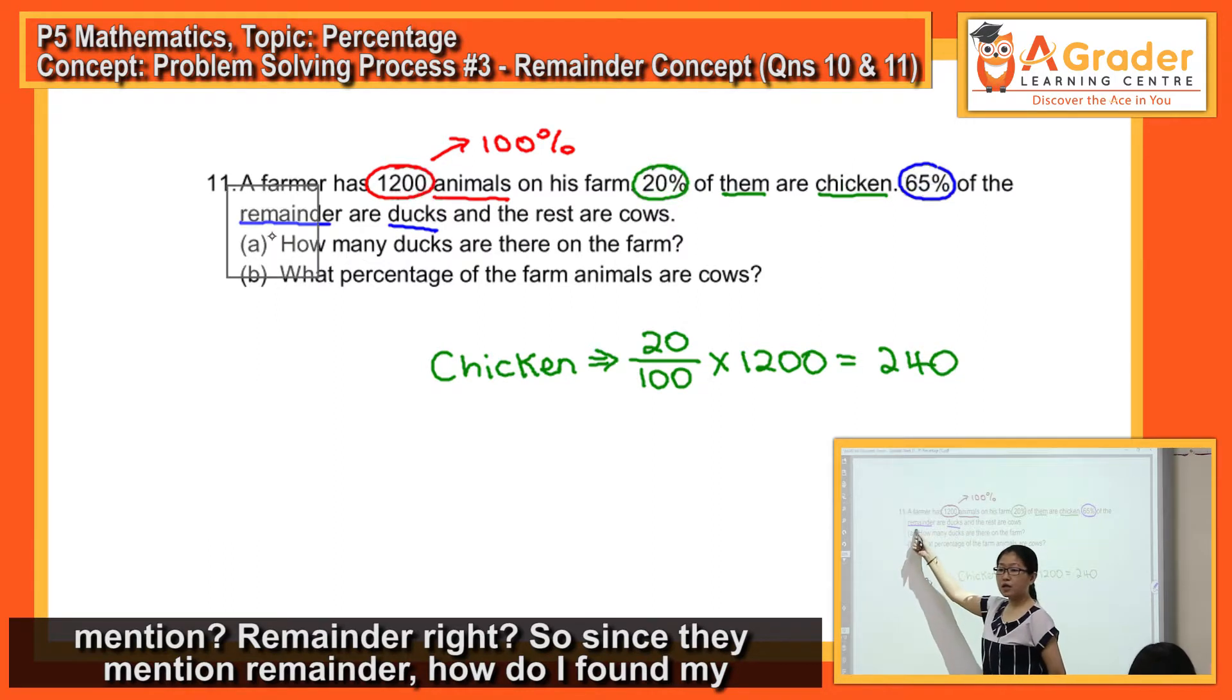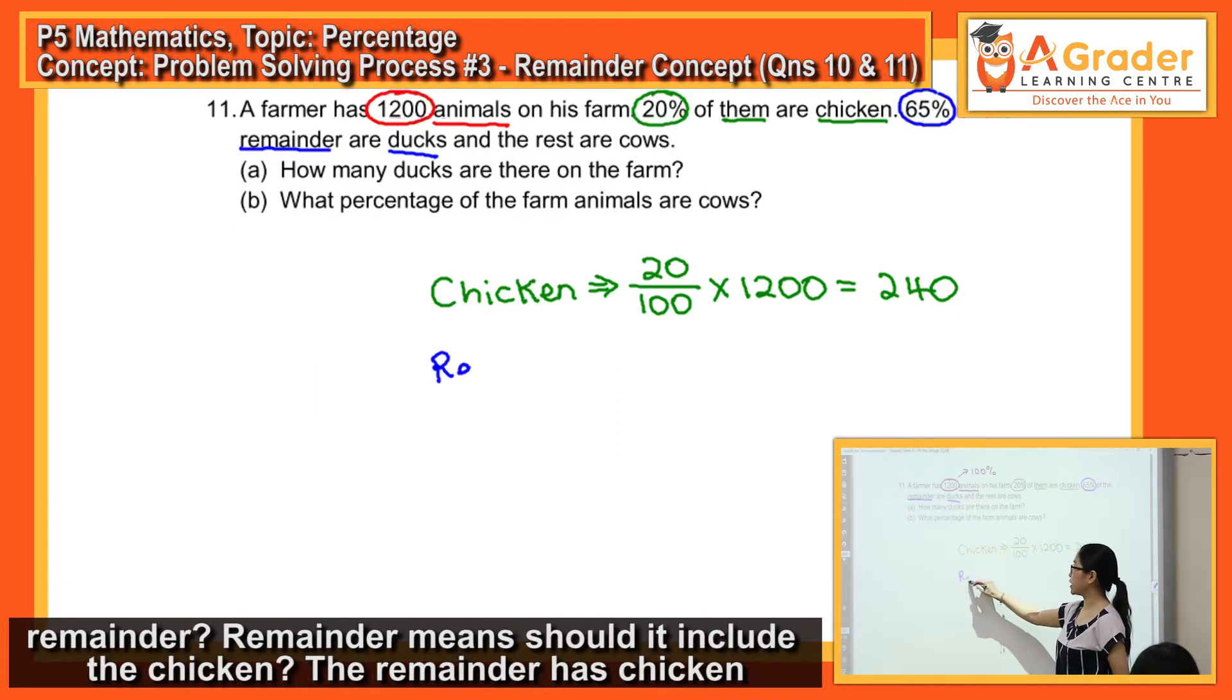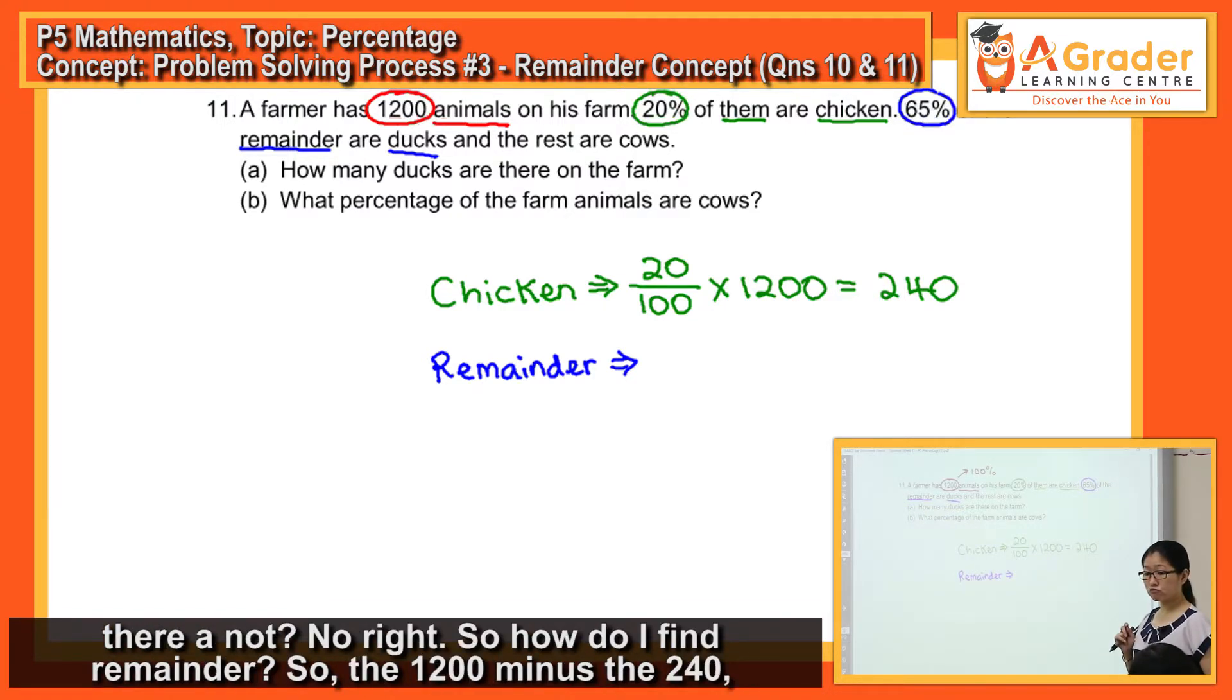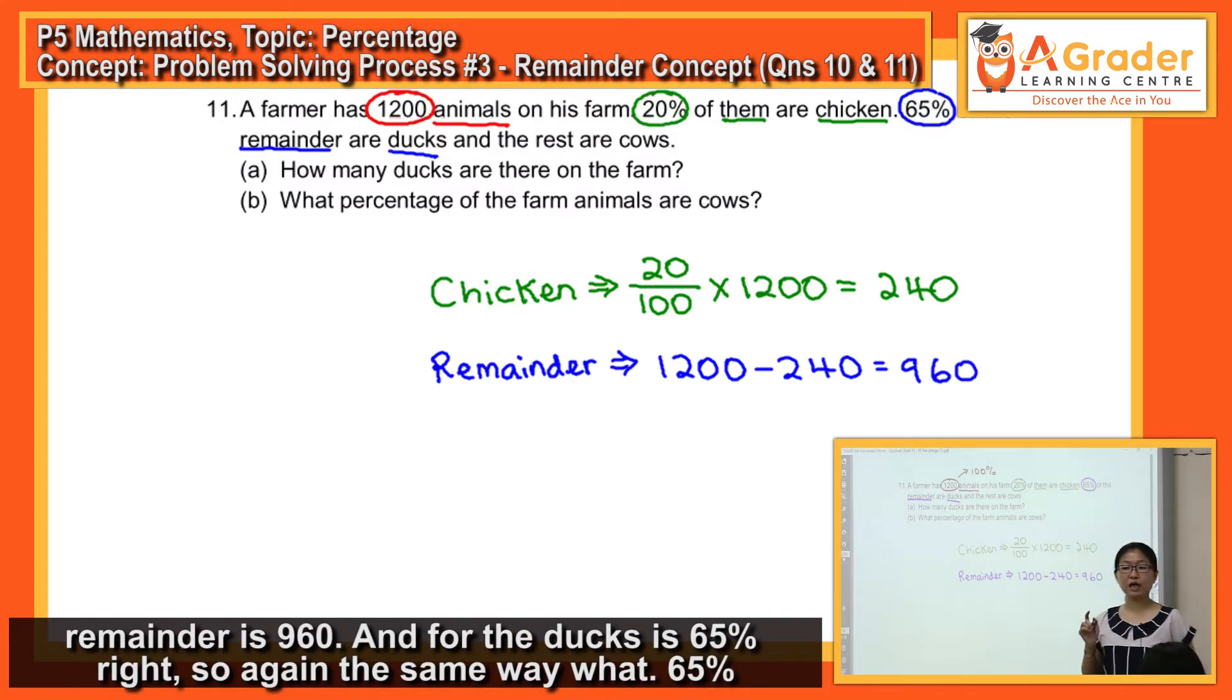And the next line again, what did they mention? Remainder, right? So since they mentioned remainder, how do I find my remainder? Remainder means, should it include the chicken? The remainder has chicken there? No, right? So how do I find remainder? So the 1200 minus the 240, remainder is 960.